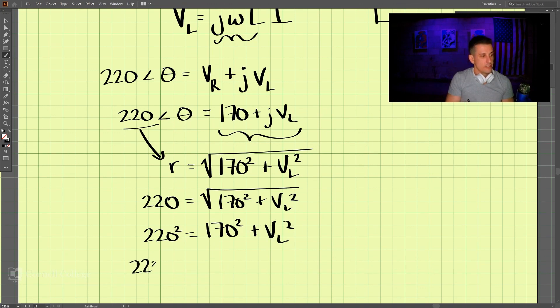We subtract: 220 squared minus 170 squared, and then taking the square root of that should equal VL, the voltage across the inductor.